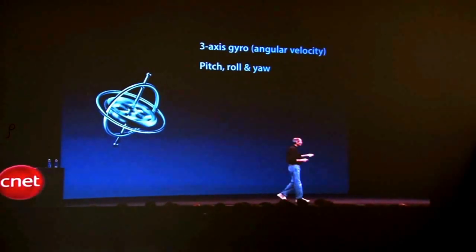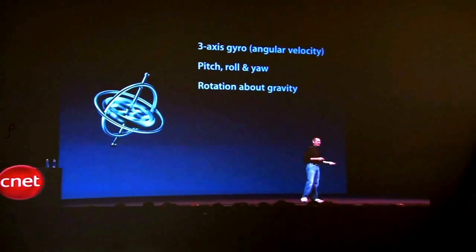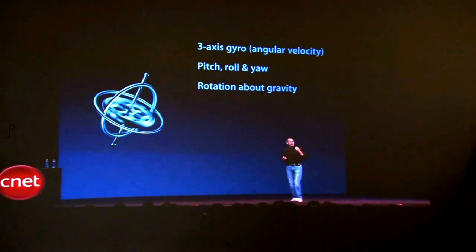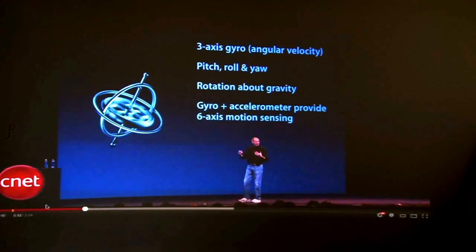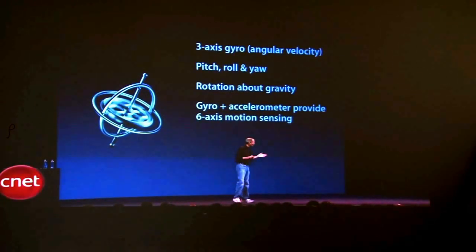Which is fantastic, pitch, roll, and yaw, also rotation around gravity. And we've tied the gyro and the accelerometer and the compass together to provide six-axis motion sensing.